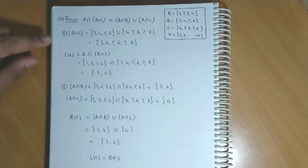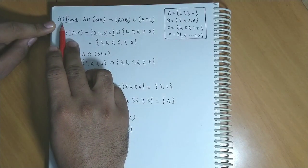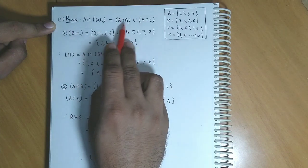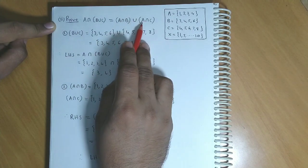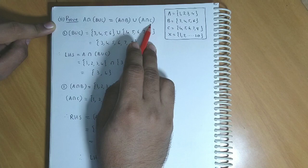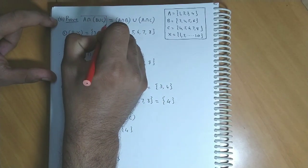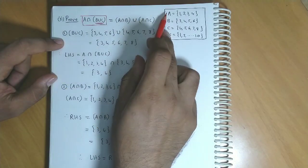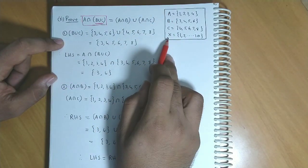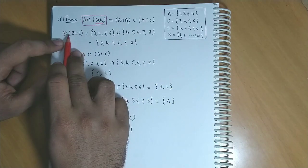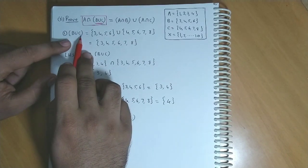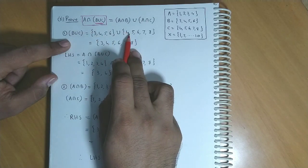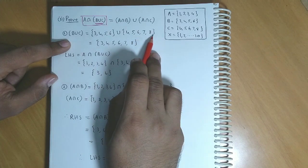Ab question number 5 ka second part dekh rahe hai. Prove that A intersection B union C is equal to A intersection B union A intersection C. Again for the left hand side, hameh pehle obtain karna hoga B union C. Ab yeh original sets hai A, B, C aur X aapka universal set hai. Toh pehle hum B union C karte hai. Set B hai {3, 4, 5, 6} aur C hai {4, 5, 6, 7, 8}.